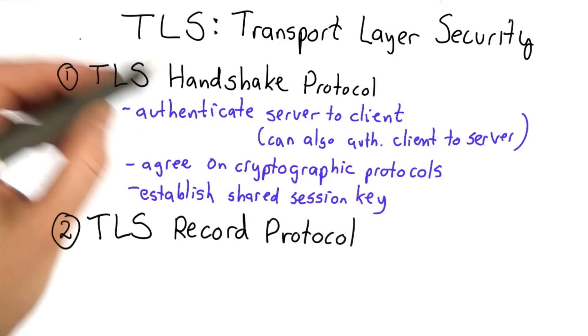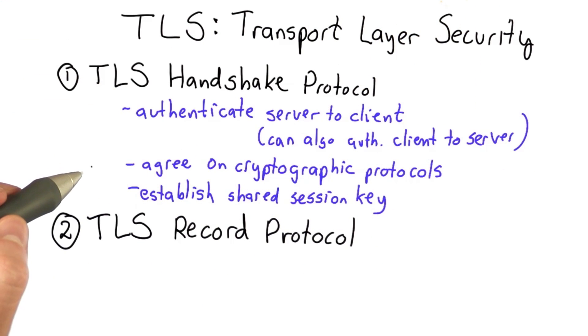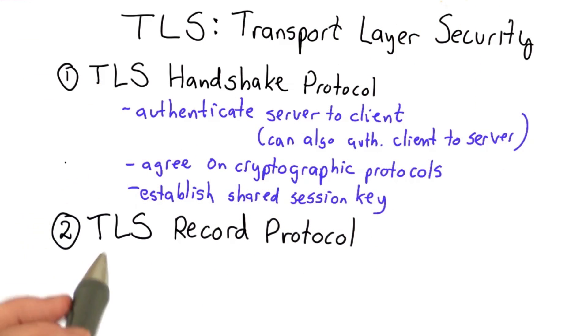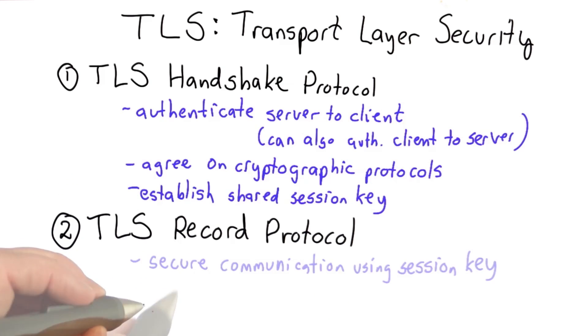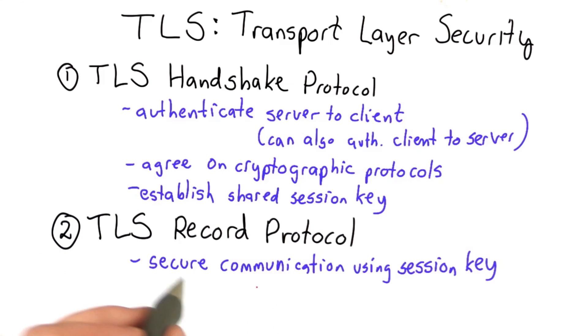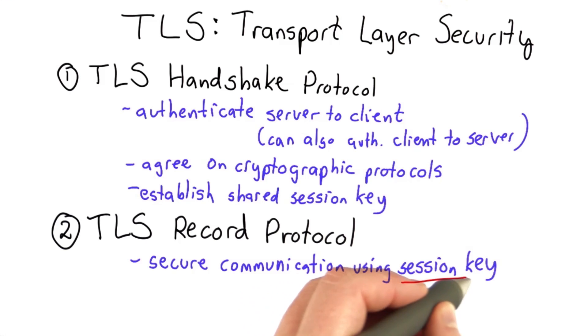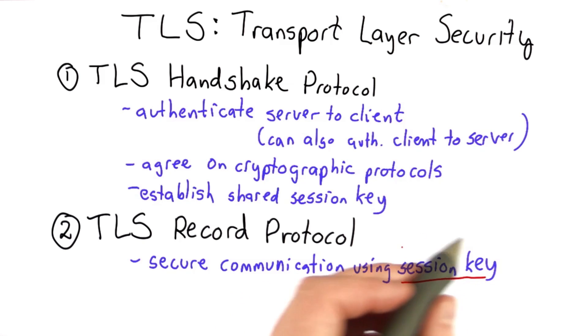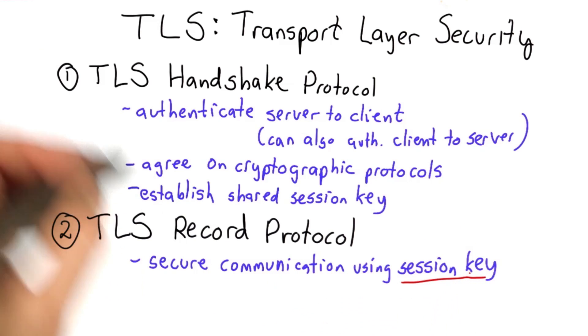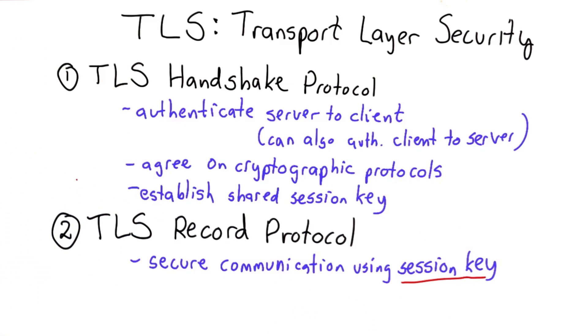The second part of the TLS protocol is the TLS Record Protocol. This is performed after the Handshake to enable secure communication between the client and the server using the session key established from the Handshake.